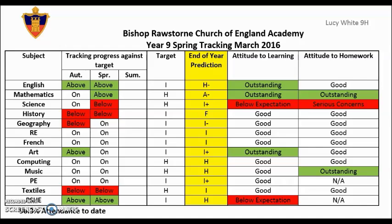The tracking progress against target columns will show a rolling three-termly progress for students across all their subjects. The two right-hand columns are also a very important indicator to students and parents of how the student is progressing in each subject area. These show the student's attitude to learning within lessons and their attitude to learning with regards to homework and independent study in the far right-hand column. In English, their attitude to learning within lessons is outstanding and their attitude to homework and home study is good. In Science, their attitude to learning in lessons is below expectation and there are serious concerns regarding homework and home study — which probably explains why the student is currently tracked as being below target in Spring.